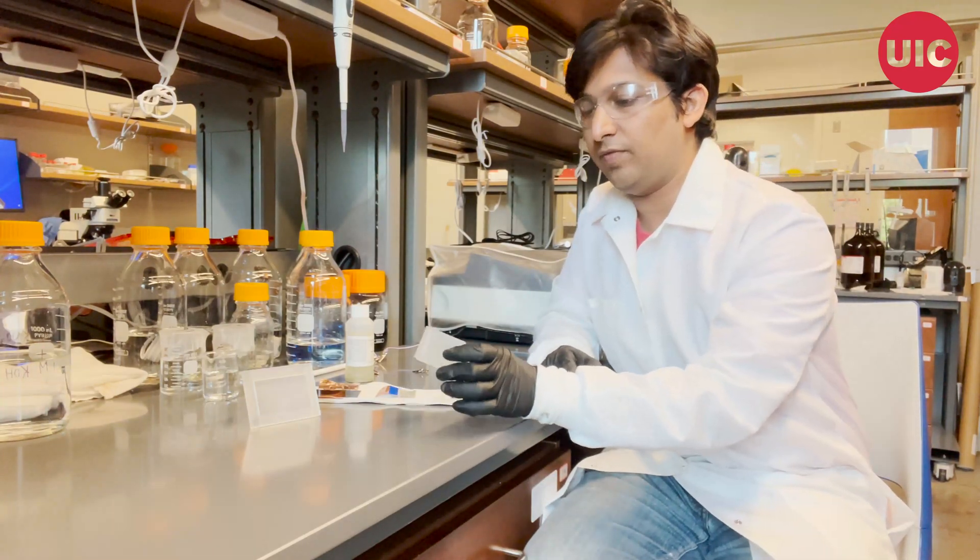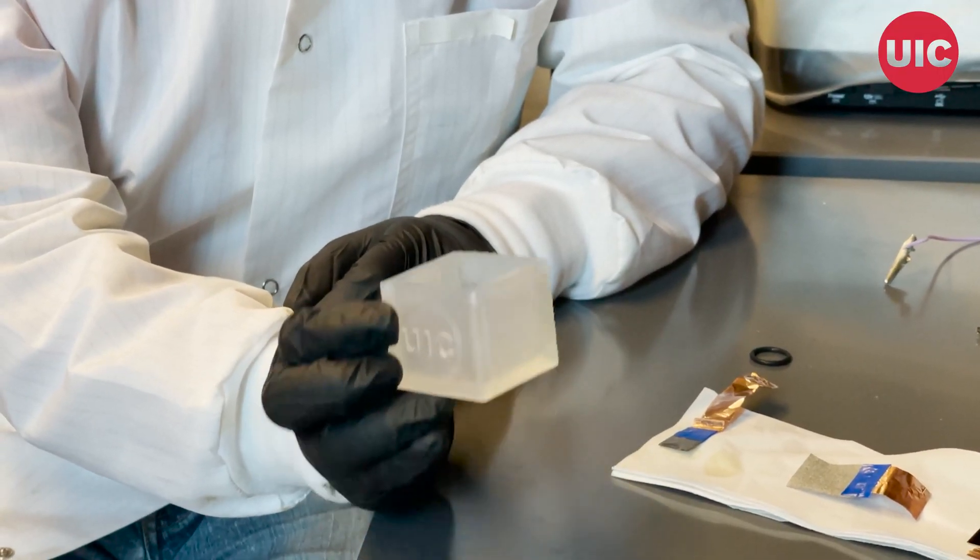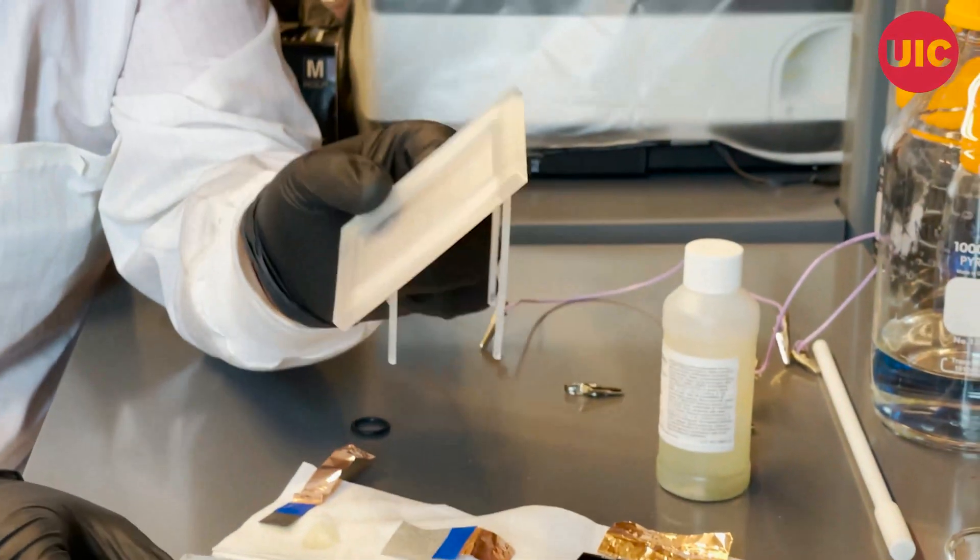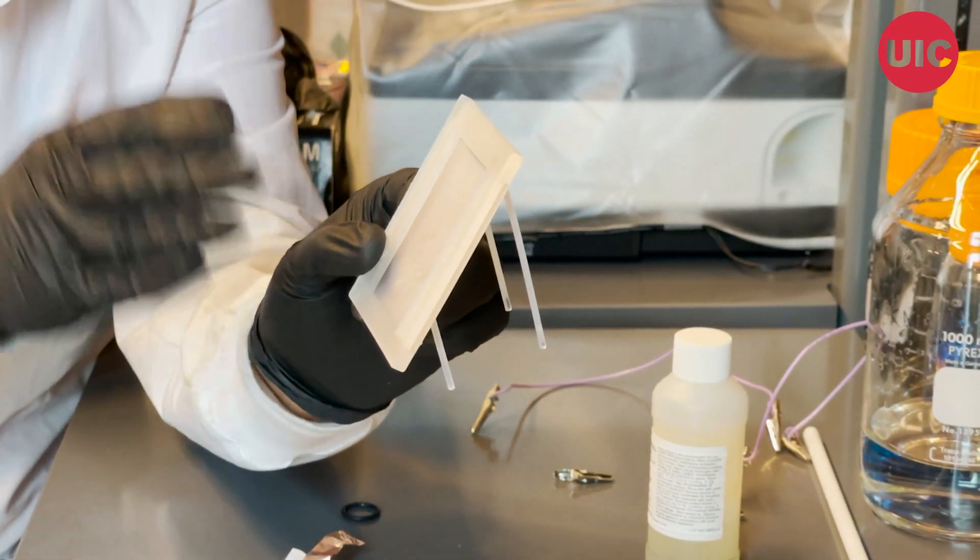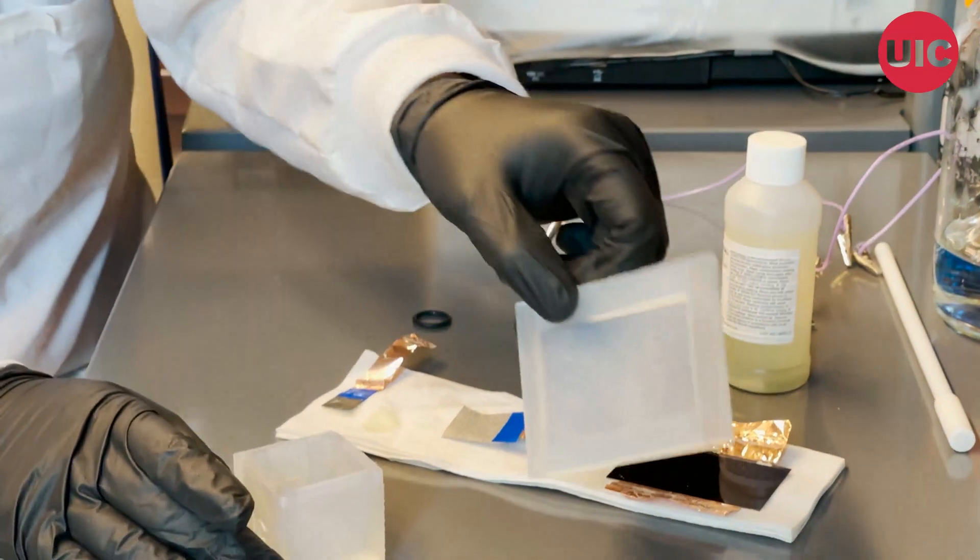We have this bottom part which is essentially our electrochemical cell where our electrodes and electrolyte will go in, and on top we have this case for our solar panel. We'll insert our solar panel in and then connect it through the cell so that we can do the electrochemical reaction.